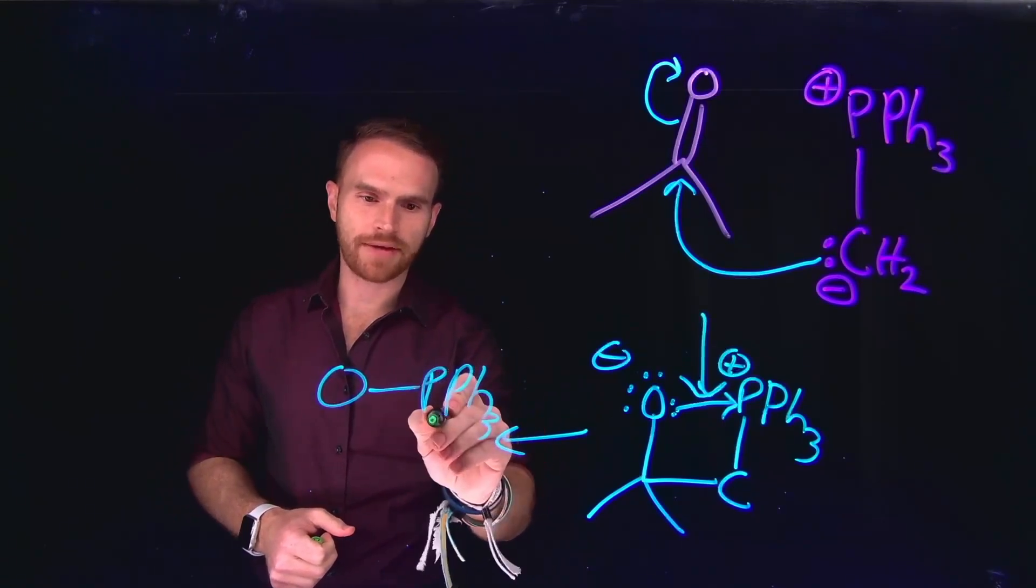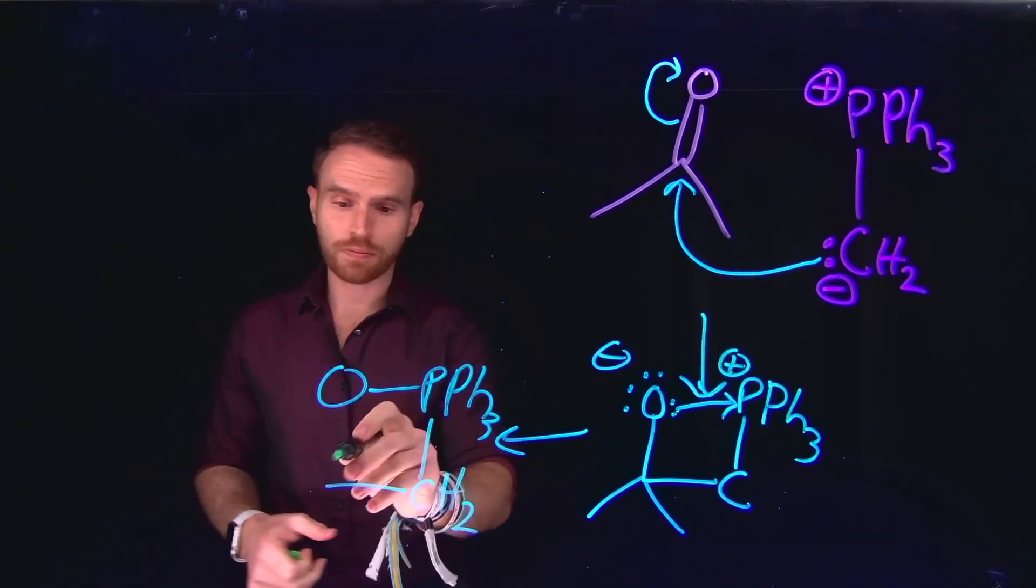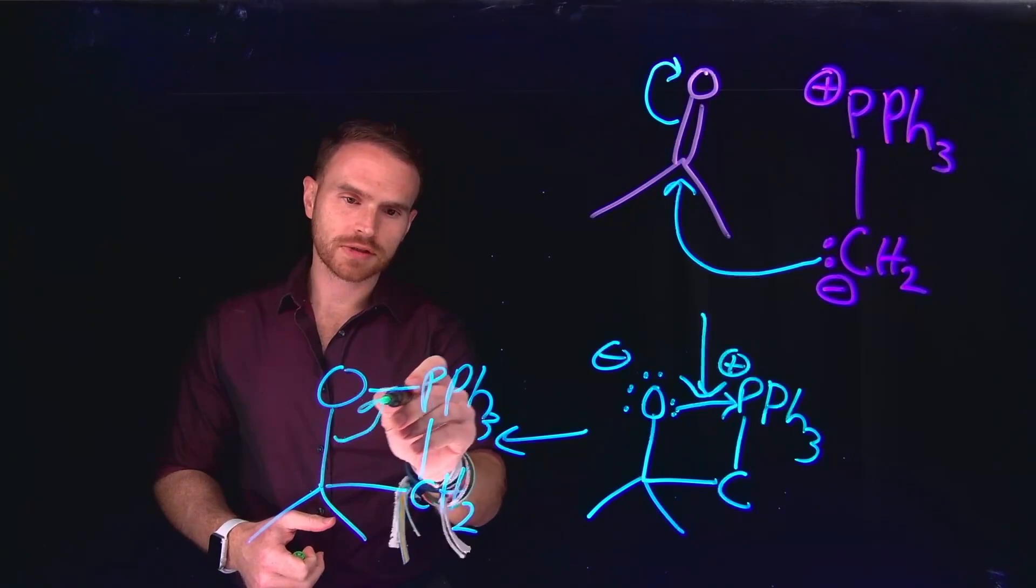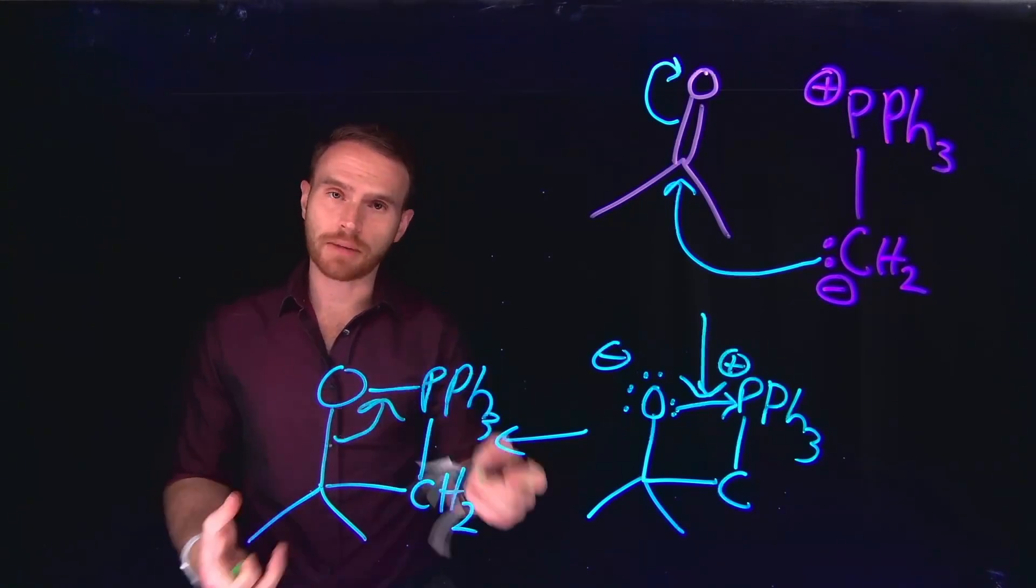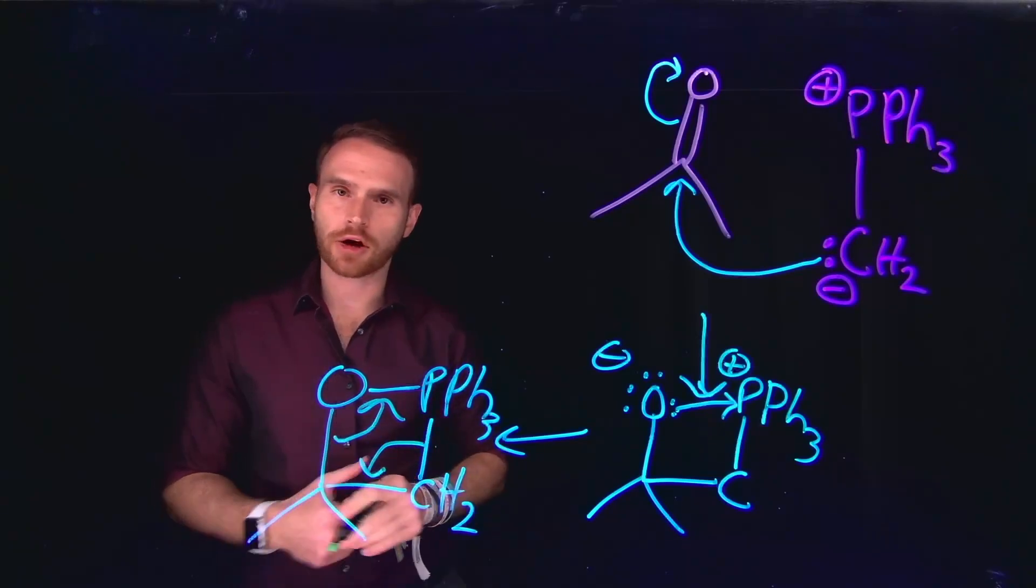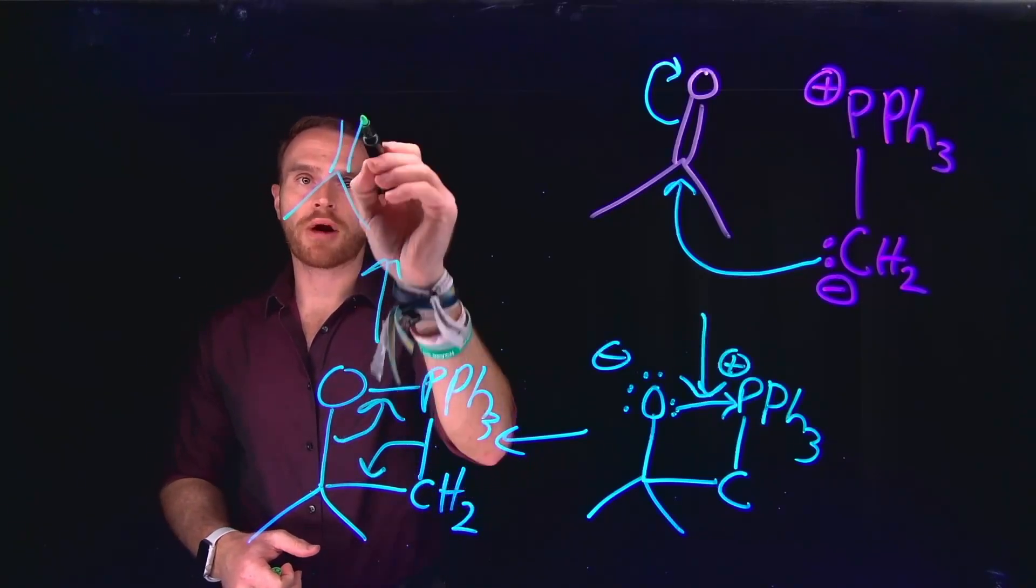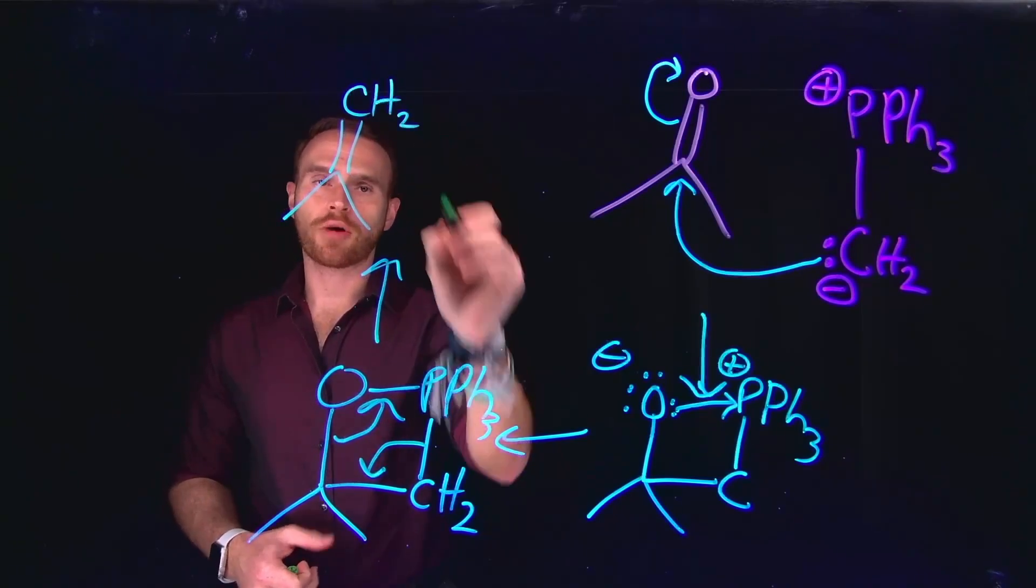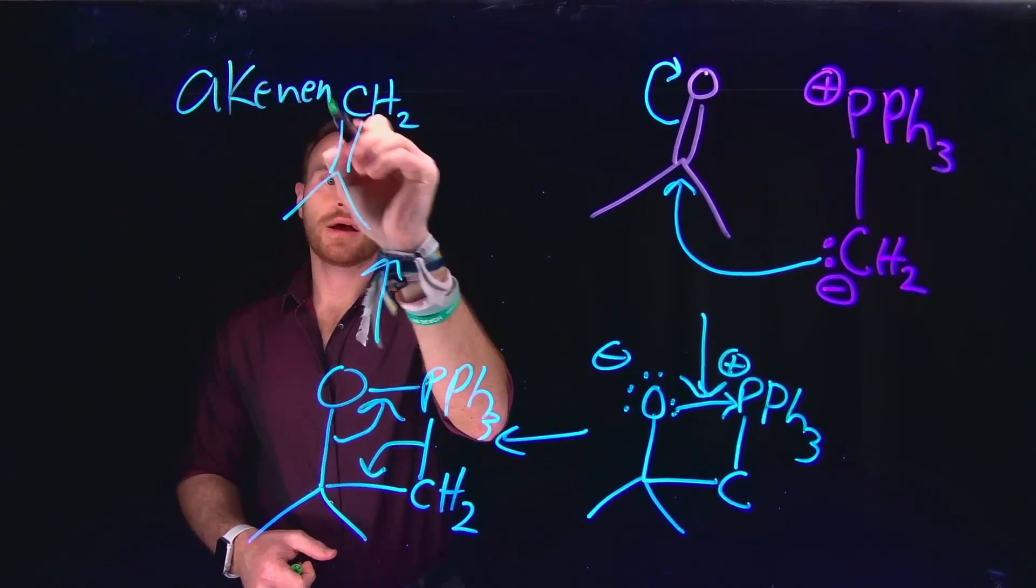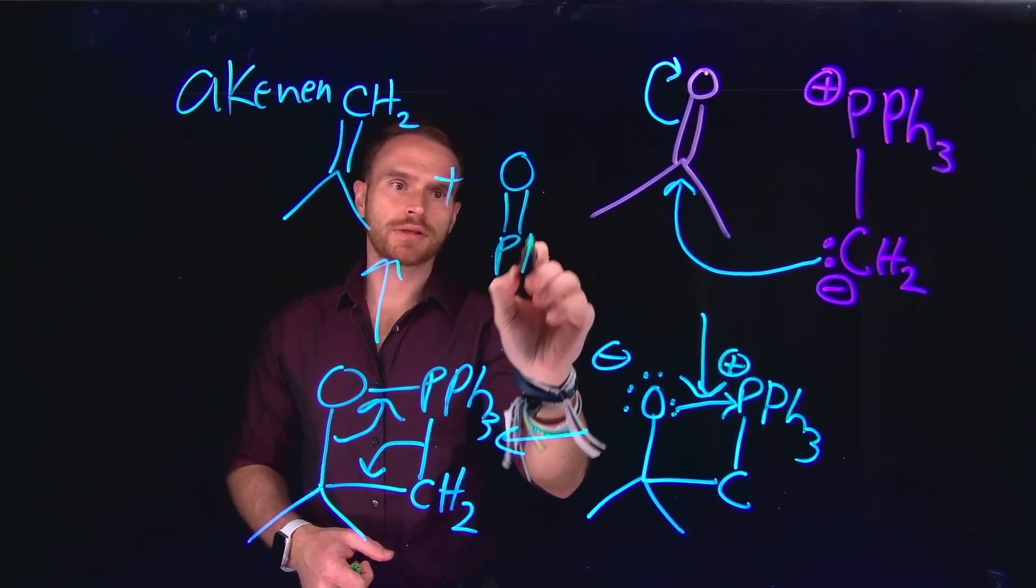The next intermediate in this mechanism is what is called an oxaphosphatane, where now we have a four-membered ring, which can undergo what is called a 2 plus 2 cycloaddition by moving the electrons, where the oxygen is now going to be doubly bound to the phosphorus atom. And our new carbon-carbon bond is going to be an alkene. So this generates our final product, which began as a carbonyl and is now an alkene, and this also releases an oxygen with a double bond to the phosphorus atom.